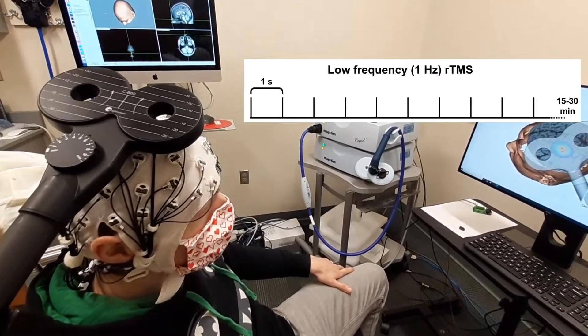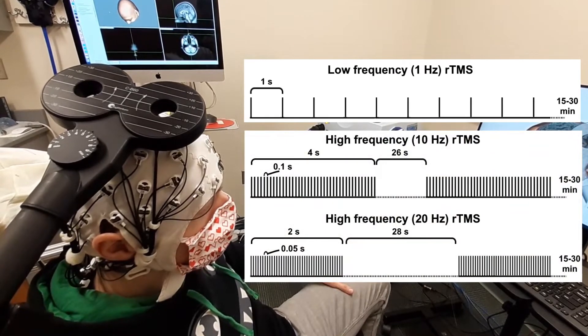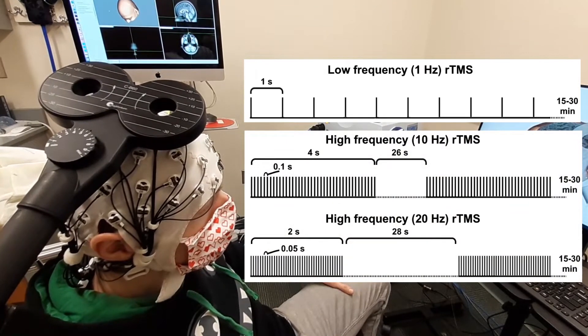On the other hand, high-frequency RTMS uses much faster pulses, typically 10 or 20 per second, and this is repeated for 2 to 4 seconds.